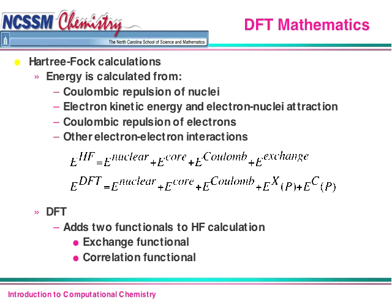A little bit about the DFT mathematics — this is going to make your eyeballs bug out. What we really care about calculating is the energy, and we do that with a variety of terms including repulsion, attraction, and something called exchange and correlation functionals. We will get into all of this notation when we reach the chapter on DFT. Right now this should look very intimidating, but I assure you we will take this apart in very slow steps, and by the time you get there, you'll have a good idea of what you're looking at.